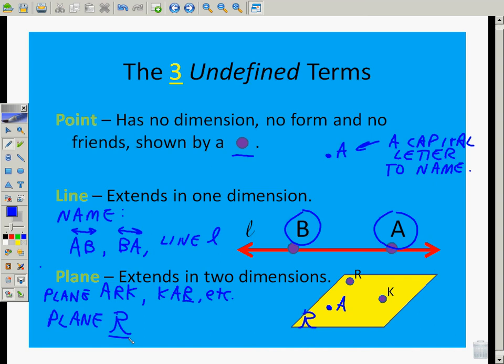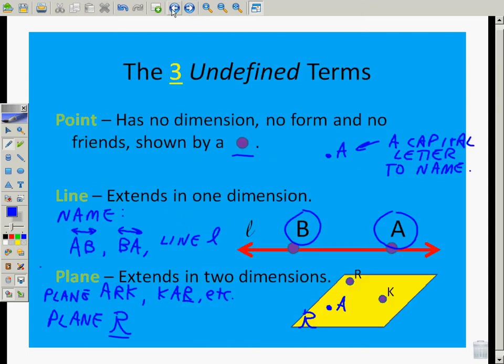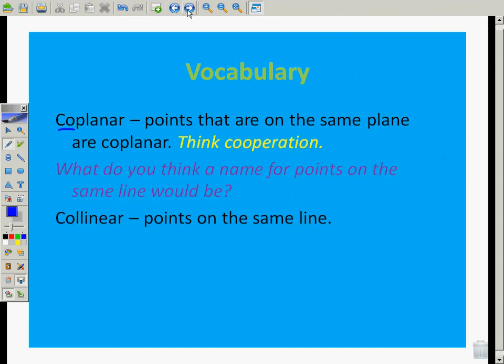So now that we've learned how to talk about them a little bit, let's learn a little bit more vocabulary. Coplanar. Points that are on the same plane are coplanar. It makes sense. Think cooperation. You're in it together. You're in the same group. You're cooperating. Well, if things are coplanar, they're in the same plane. I mean, look back here. A, R and K were coplanar. They were all in the same plane. Three points.